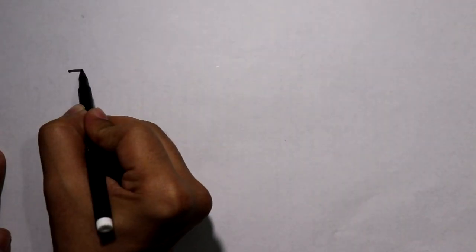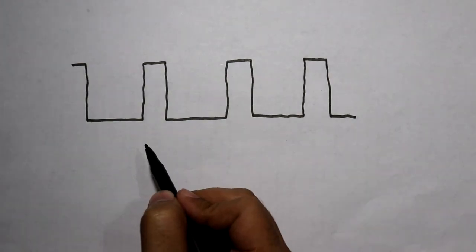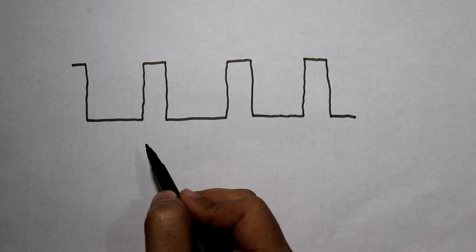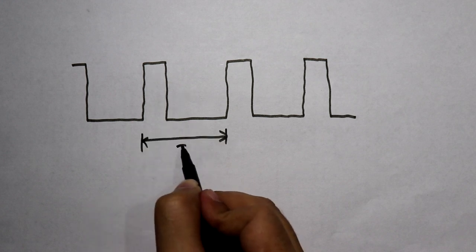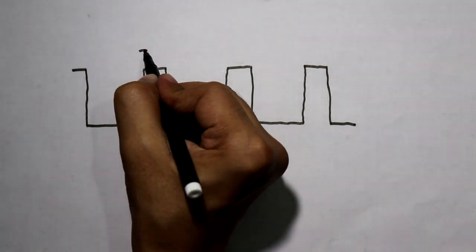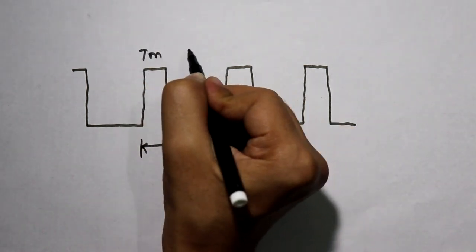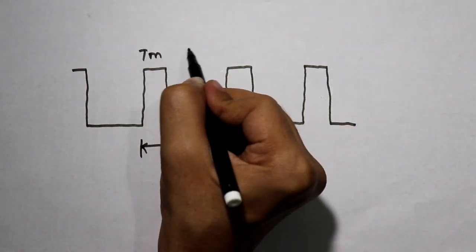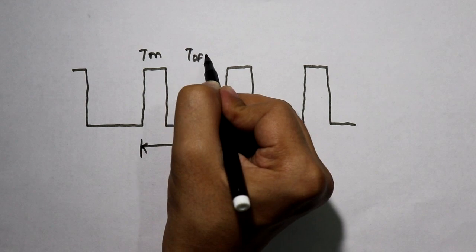Now see this — this is the output of the 555. As I have explained in the previous video, this is the total time period. This one we call T-on, and this time period we call T-off.